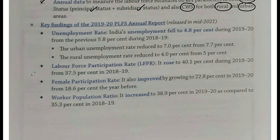Key findings kya nikle hain 2019-20 ke Periodic Labor Force Survey ke annual report mein, jisko release kiya gaya mid-2021 mein? Toh unemployment rate India ka — it fell to 4.8% during 2019-20, from the previous 5.8% — poora ka poora 1% gir gaya ek saal pehle ki comparison mein, yaani 2018-19 ki comparison mein.